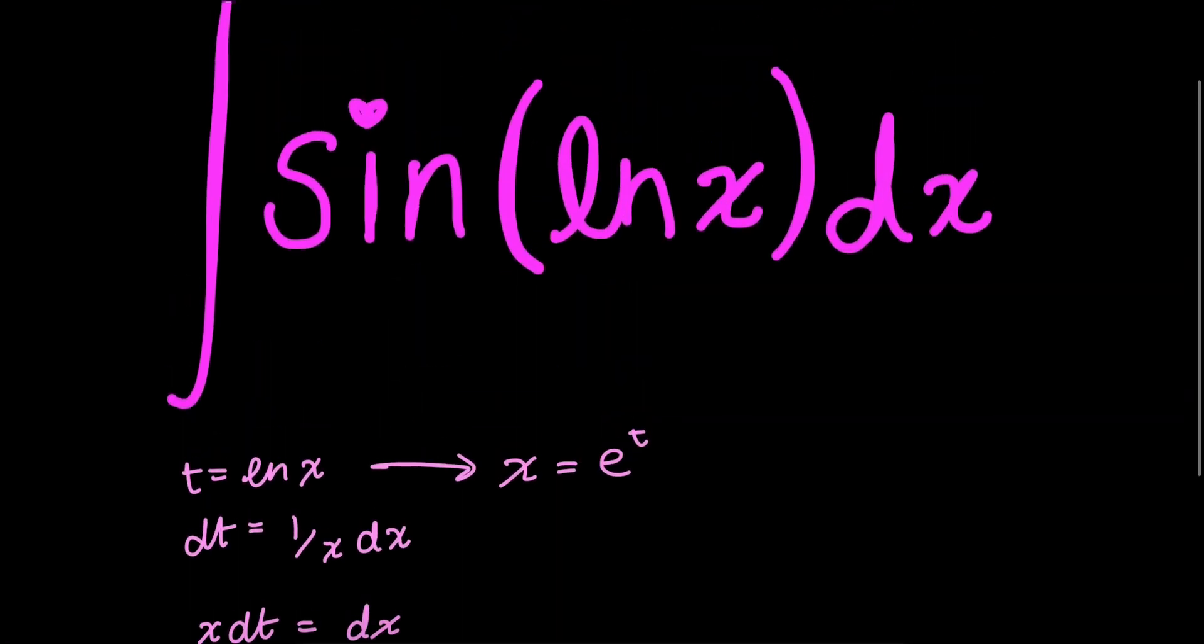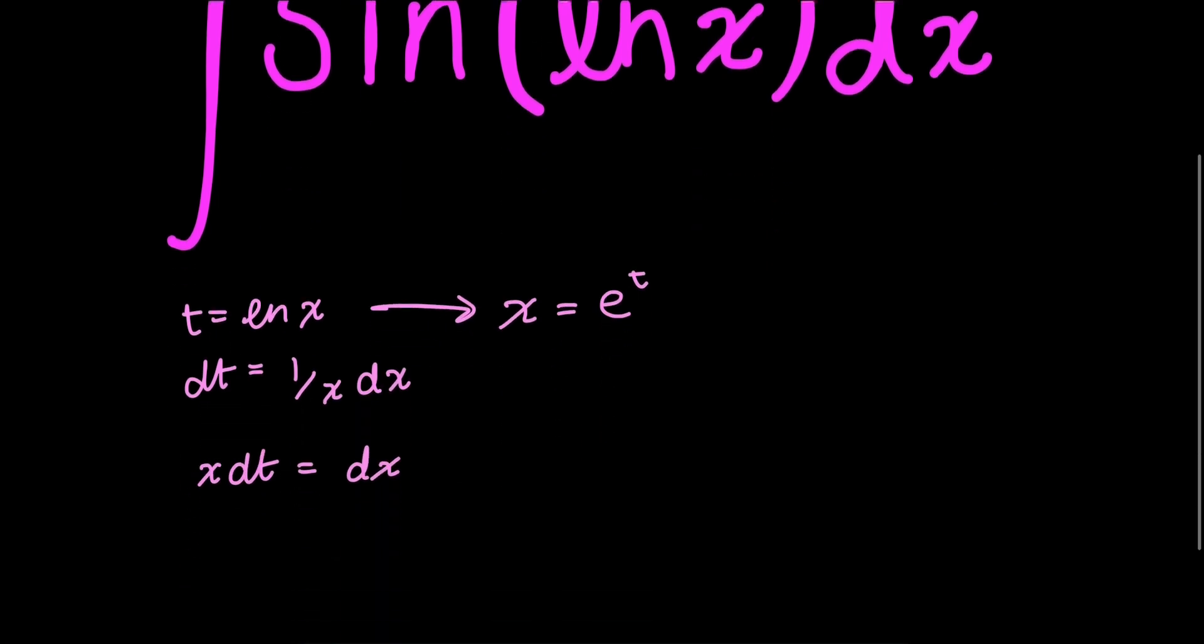So now I can rewrite my integral in terms of the new variable t. So it becomes the integral of e to the t times sine t dt. And now this might seem a little more familiar.